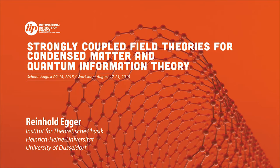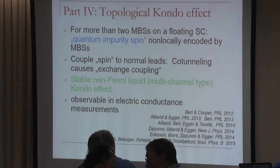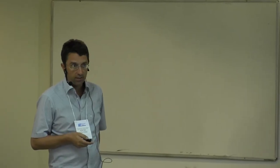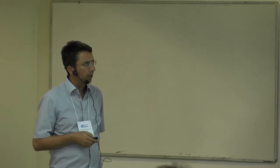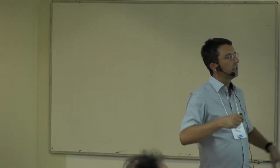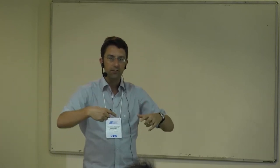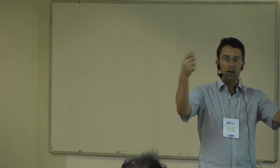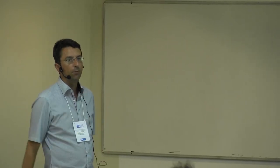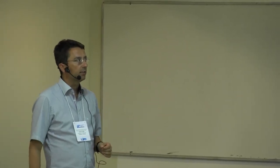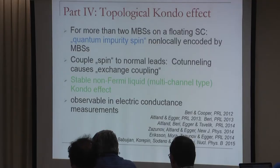I started in the morning talking about the topological Kondo effect, which happens if we have more than two Majorana bound states on a floating superconductor. In that case we have a quantum impurity spin degree of freedom non-locally encoded by the Majorana states. This spin couples via exchange-like processes to normal leads, giving a screening just like in the conventional spin-one-half Kondo effect where a magnetic impurity is screened at low temperatures by surrounding metallic electrons.